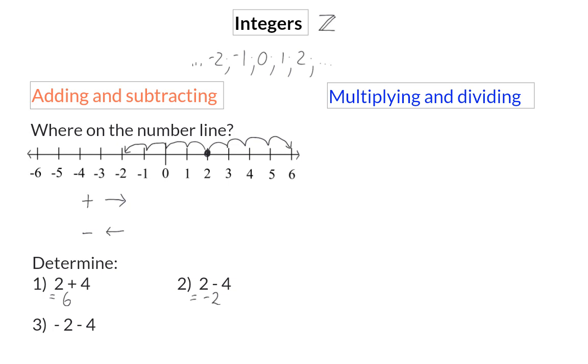And in number 3, we start at minus 2 on the number line, and move even more negative 4 spaces, and that will be negative 6. So, for adding and subtracting, you need to determine where you are on the number line.